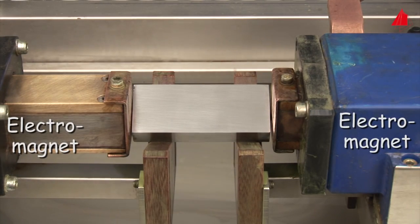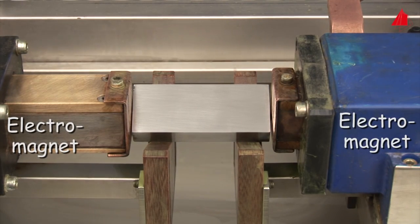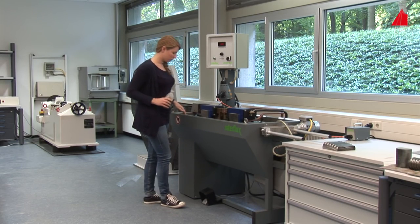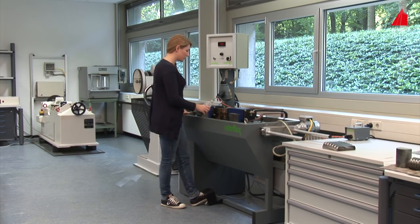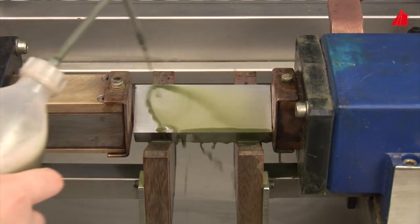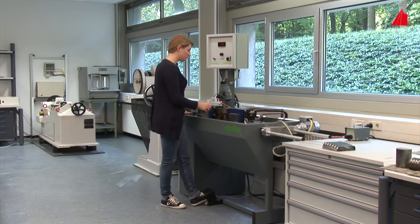She inserts the test piece between the two poles of an electromagnet, then takes a bottle with a suspension of magnetic particles, turns on the electromagnet with a foot switch, and applies the suspension of magnetic particles onto the test piece.